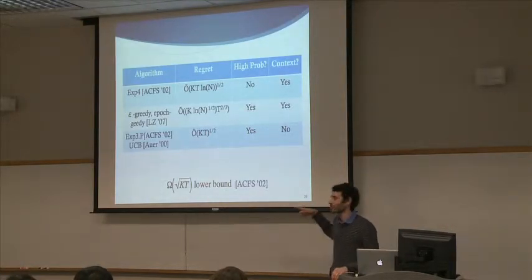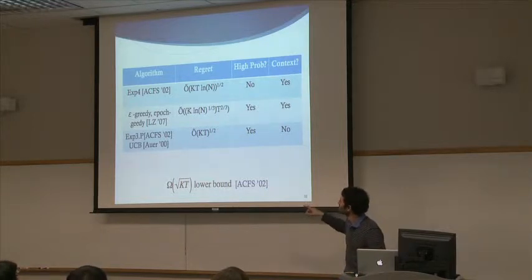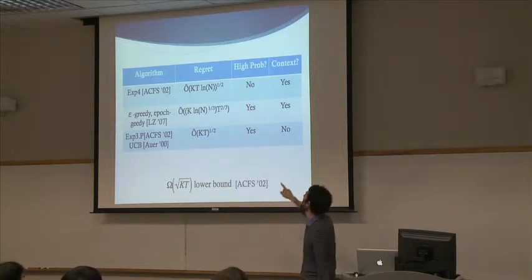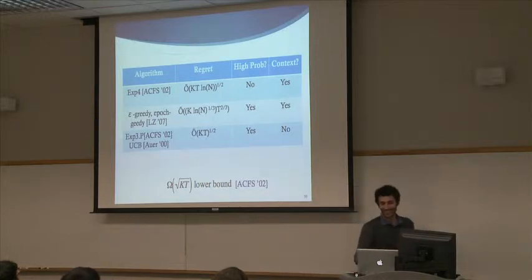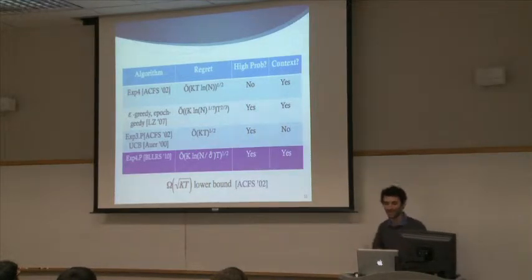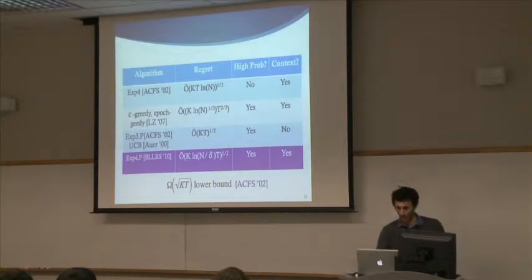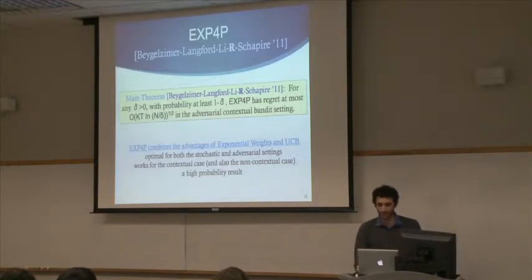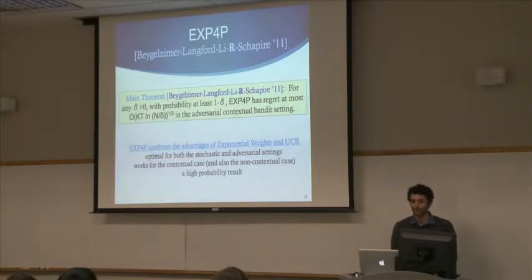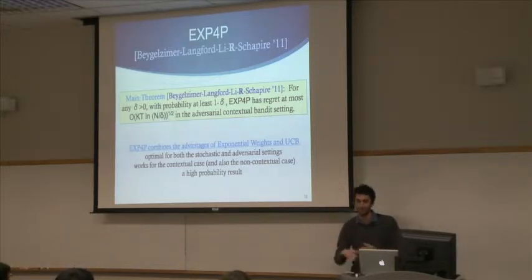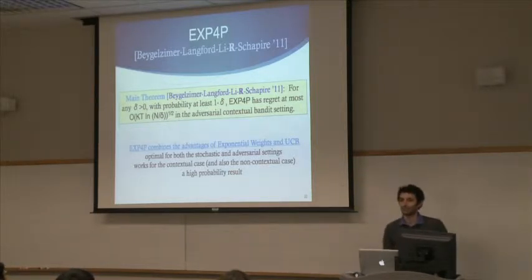Before this new algorithm, the state of the world was: you could have an optimal contextual algorithm but it won't succeed with high probability; you can have a high-probability contextual algorithm but it won't be optimal; or you can have a high-probability optimal algorithm but it's not contextual. What we do is provide an algorithm that is optimal, high-probability, and contextual. The theorem states that for any delta > 0, with probability at least 1 - delta, the regret is optimal, combining advantages of all previous approaches.